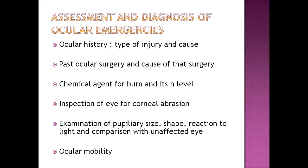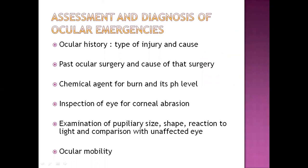Past ocular surgery and the cause of that surgery should also be asked. If surgery has been done, the cause should be found. Chemical agents for burns and high pH level should be detected. Inspection of the eye for corneal abrasion can be done. Examination of the pupil for size, shape, and reaction to light can be done so that it can be compared to the other eye. Ocular mobility can be tested — movement of eye muscles helps determine whether there is a problem in ocular muscles.